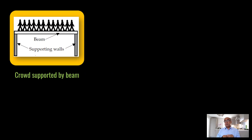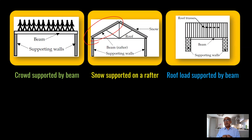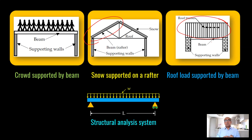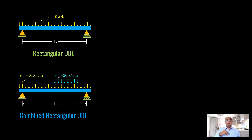Examples of distributed loads include a crowd supported by a beam, snow on a rafter (a roof beam), and trusses resting on a beam — all applying uniformly distributed load. In structural analysis, regular UDL means the load does not change along the beam length. Combined rectangular UDL means one portion has higher intensity: for example, 10 kilonewton per meter on the entire length with an additional 20 kilonewton per meter on a portion.